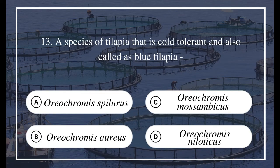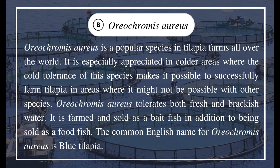Question 13: A species of tilapia that is cold-tolerant and also called blue tilapia is A) Oreochromis spilurus, B) Oreochromis aureus, C) Oreochromis mossambicus, D) Oreochromis niloticus. The answer is B) Oreochromis aureus. Oreochromis aureus is a popular species in tilapia farms all over the world.